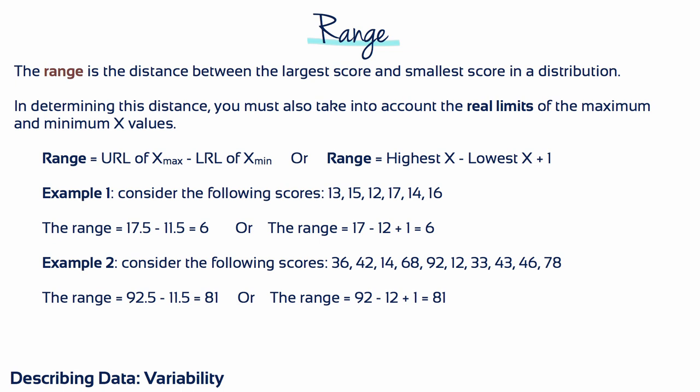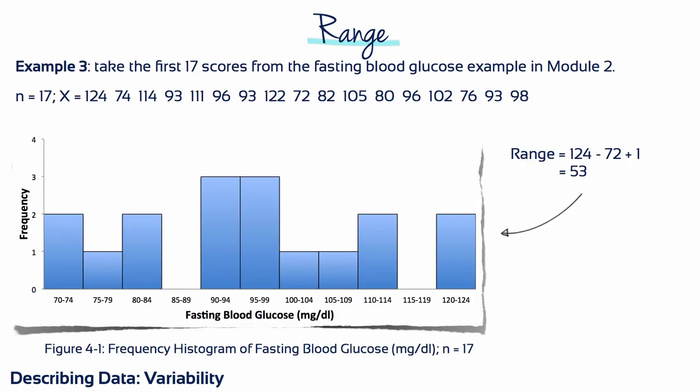Some researchers don't bother considering the real limits when calculating the range — and they're just wrong. We recommend that you do, because the range is typically used with interval or ratio scale measurements of a continuous variable. In example 3, let's take the first 17 scores from the fasting blood glucose example in module 2. Fasting blood glucose is a continuous variable on a ratio scale. The highest and the lowest values here are 124 and 72. So the range is 124 minus 72 plus 1, which equals 53.